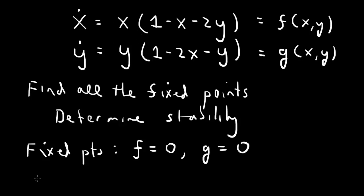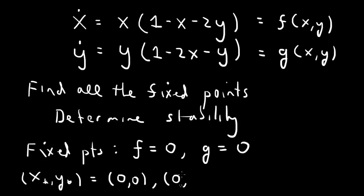What are the fixed points here? We can read off some of them. Let x-star and y-star be the fixed points. Certainly (0, 0) is a fixed point. If x equals 0, then f is 0. If x equals 0 and y is not equal to 0, then 1 minus y must be 0, so y equals 1 is a fixed point. Similarly, if y equals 0, then g is 0, and if y equals 0 and x is not 0, then 1 minus x has to be 0, so x equals 1. Those are three rather simple fixed points.